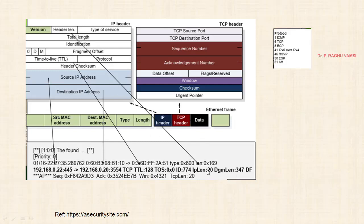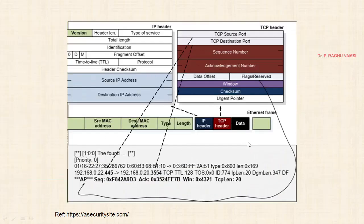The protocol numbers are: 1 for ICMP, 6 for TCP, 8 for EGP, 41 for IPv6 over IPv4, 46 for RSVP, 50 for ESP, and 51 for Authentication Header used in IPv6. This kind of protocol information can be found in the packet traces.